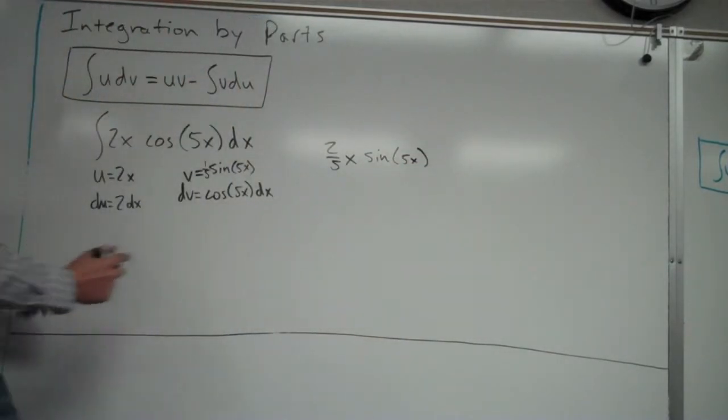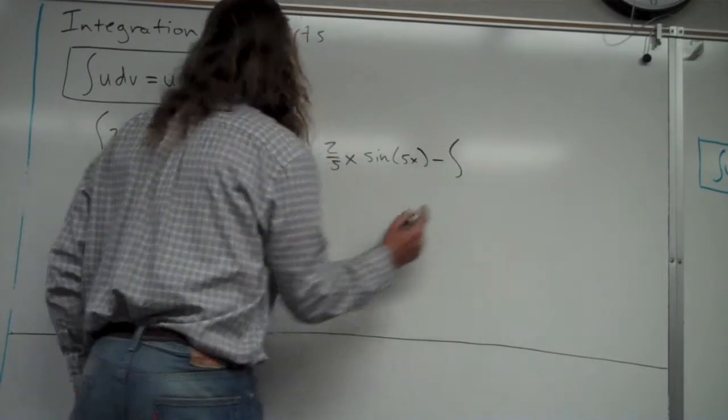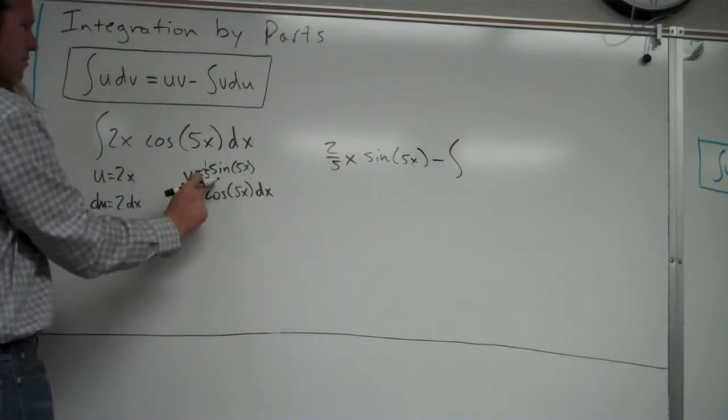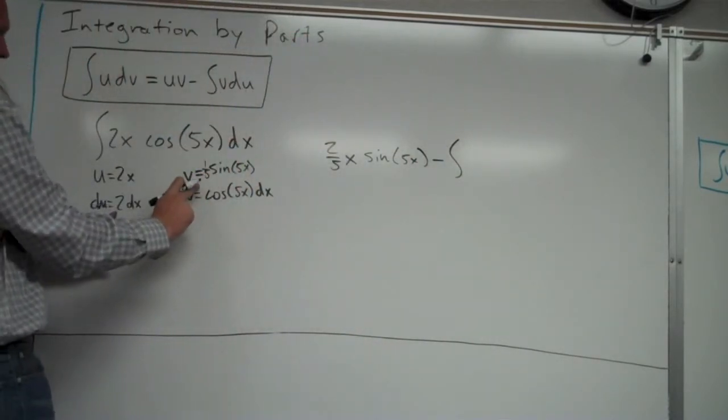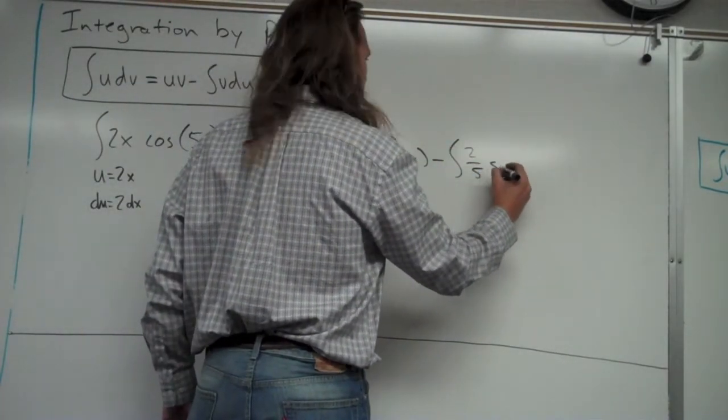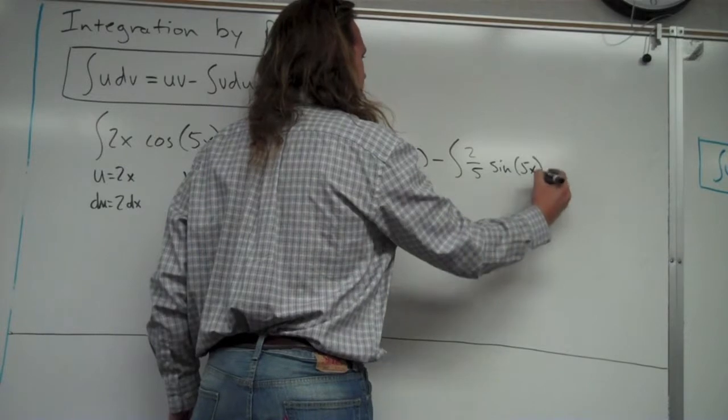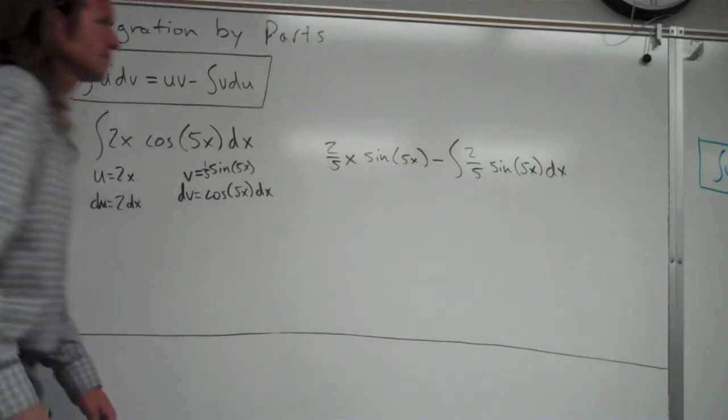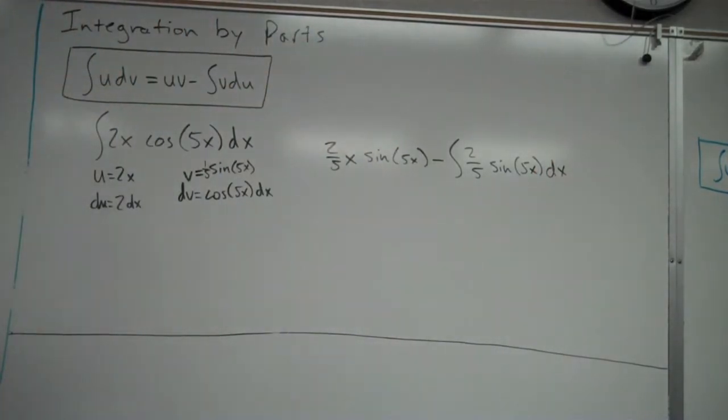And then I'm going to do minus the integral of v du. So here's v, here's du. So it's going to be 2 fifths sine 5x. Let's see here. 2 fifths x sine 5x minus 2 fifths. Okay, I think that looks good so far.